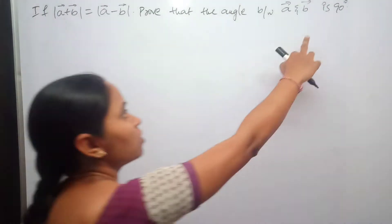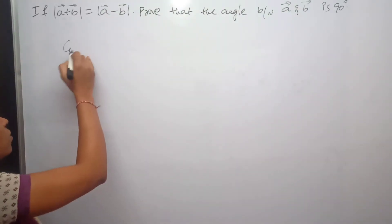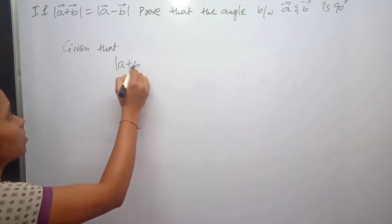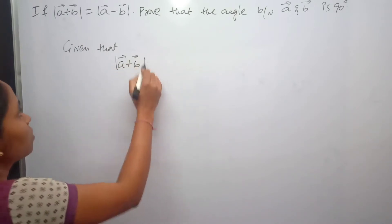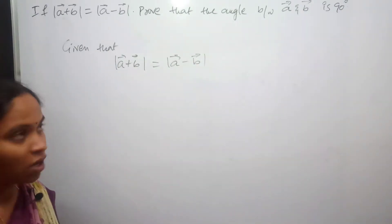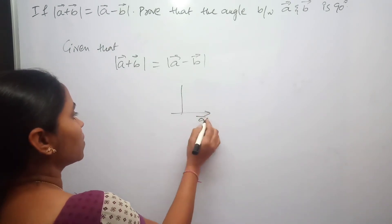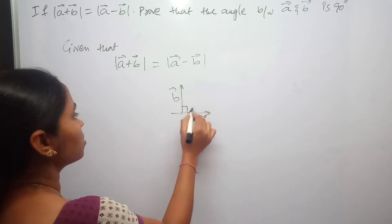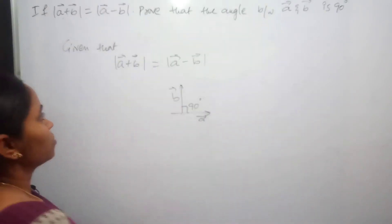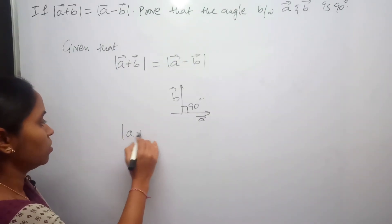So what we have in our question — given that modulus of a+b is equal to modulus of a-b, and we have to prove that the angle between these two vectors, a and b, is 90 degrees.